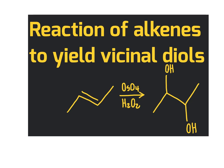In this unit, we discuss how to convert alkenes into vicinal diols. The term vicinal refers to groups that are bonded to adjacent carbon atoms. So here we have two adjacent carbon atoms, each with a hydroxy group on them — we describe this as having vicinal hydroxy groups. The hydroxy groups are alcohol functional groups, so we refer to this as a vicinal diol, where 'di' means 2 and '-ol' means alcohol. We're going to be converting, using an addition reaction, the alkene functional group to a vicinal diol.